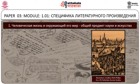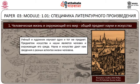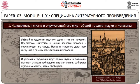Человеческая жизнь и окружающий его мир – общий предмет науки и искусства. Ученый и художник изучают один и тот же предмет. Наука и искусство дают нам сведения о разных аспектах жизни человека. И ученый, и художник идут одним путем в познании истины: сначала наблюдают, изучают жизнь, собирают отдельные факты, затем обобщают.